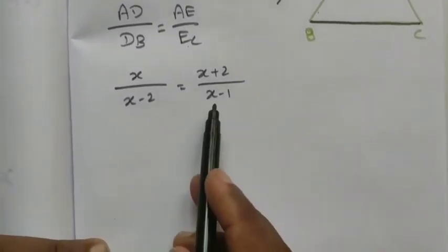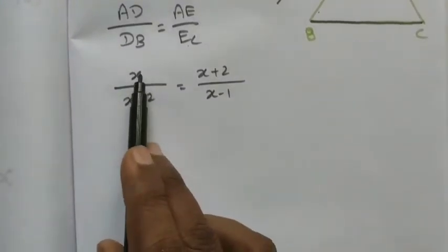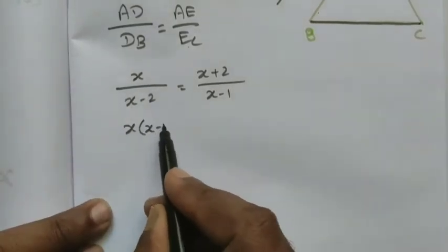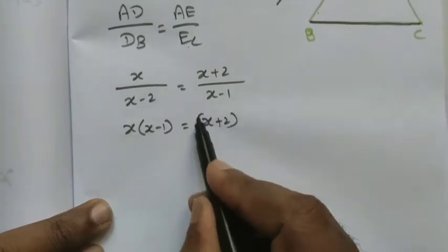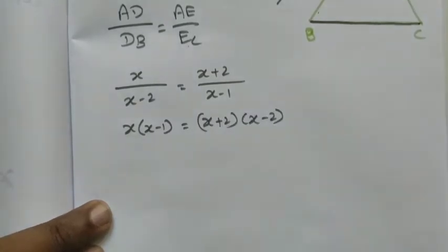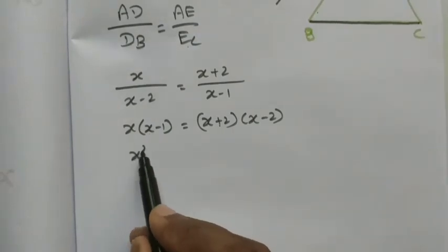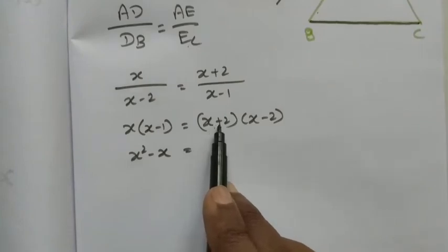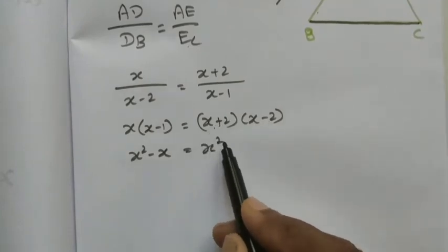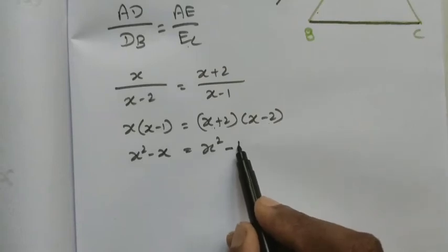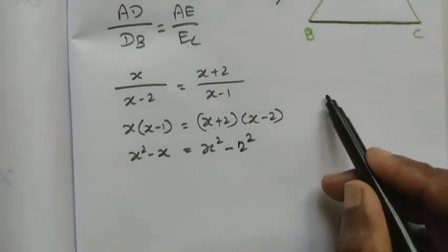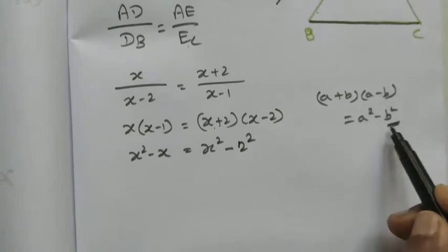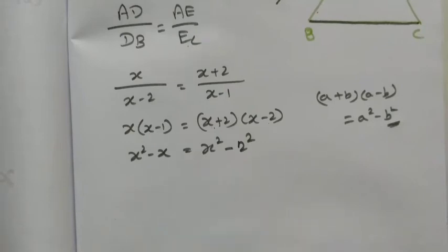Now we cross multiply: x into (x minus 1) equals (x plus 2) into (x minus 2). The right side is in the form (a plus b)(a minus b), so we apply the identity a² minus b², giving us x² minus x equals x² minus 2², that is x² minus 4.